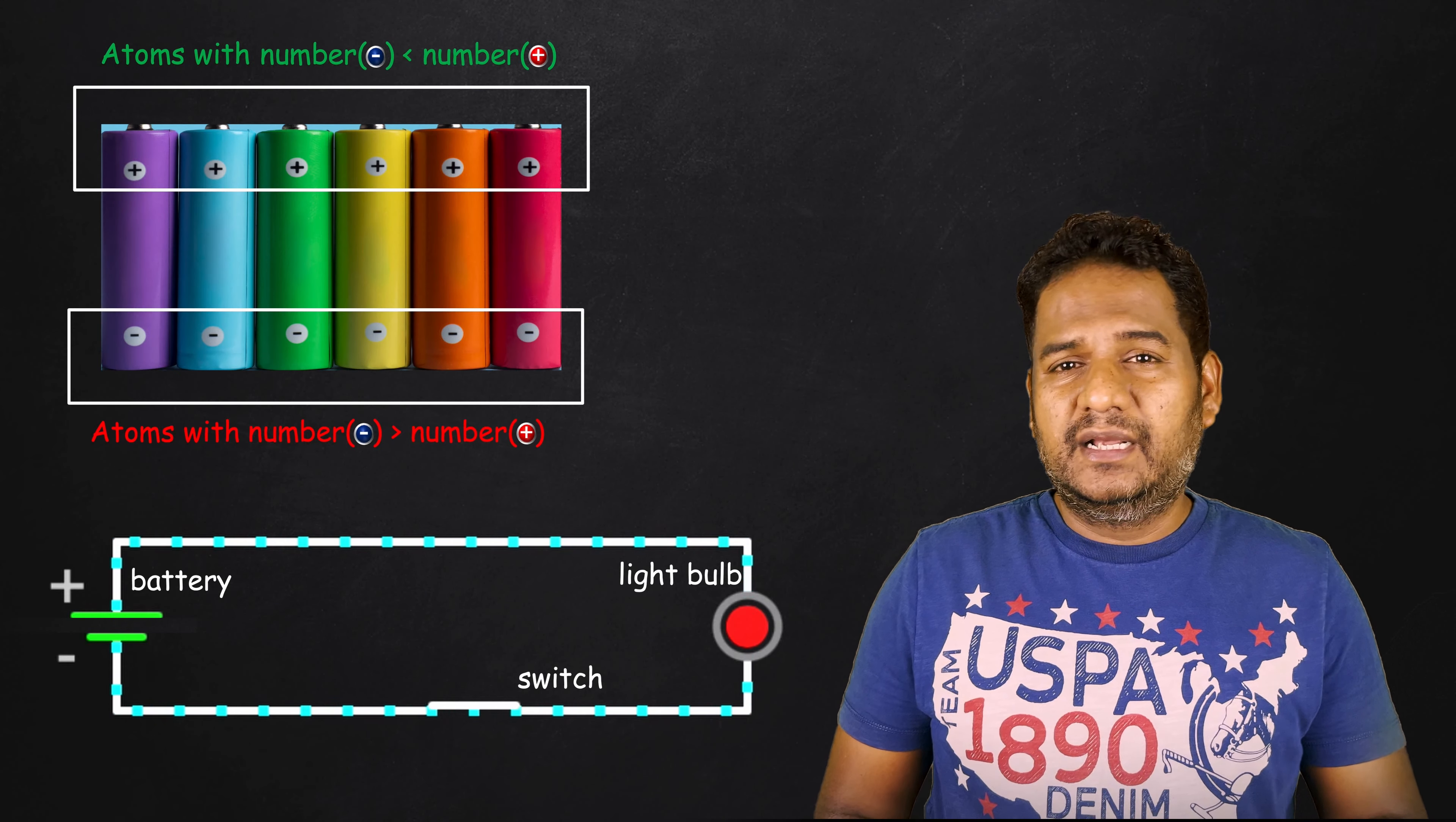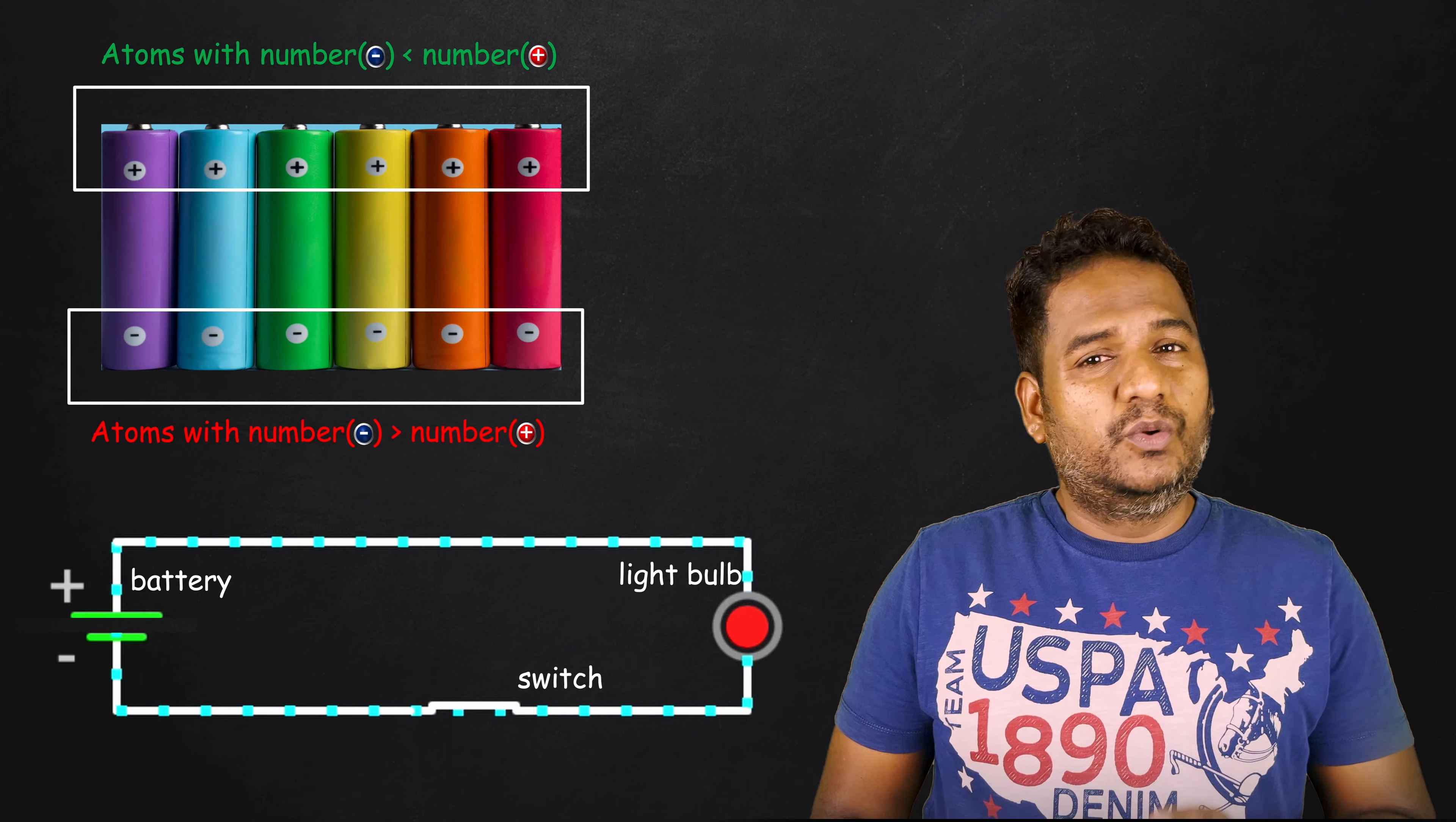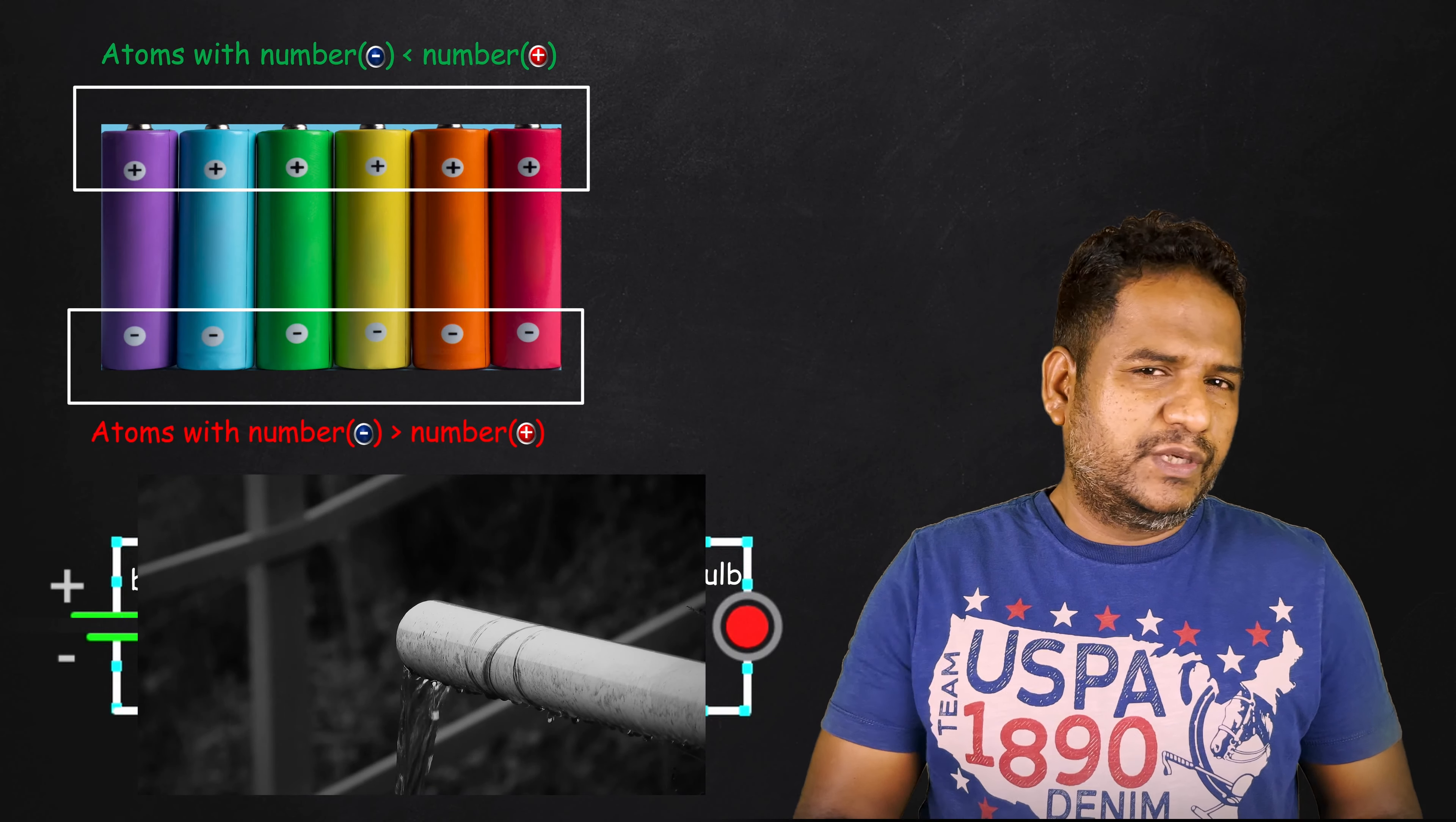When the flow of electrons happens, electric current is produced. The flow of electrons makes a bulb glow. Note that the electrons are not consumed by the bulb, but they just flow through as water flows through a pipe to reach its destination.